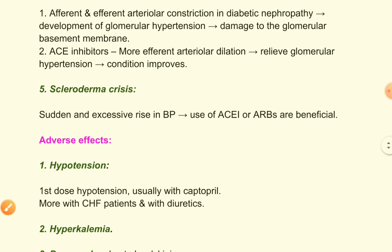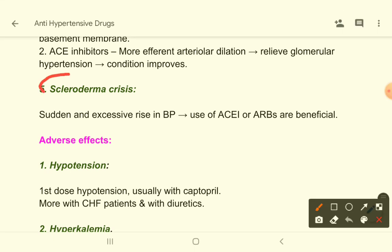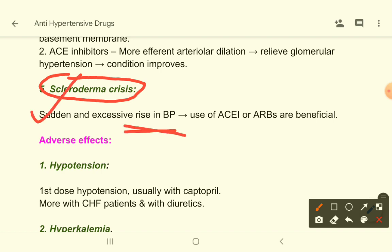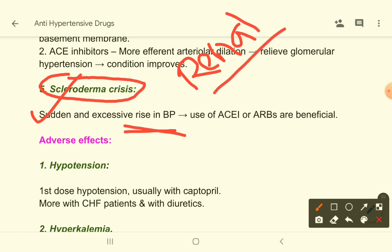In scleroderma crisis — a connective tissue disease with dermatological manifestations — there is sudden excessive rise in blood pressure, also called scleroderma renal crisis. ACE inhibitors or ARBs can be used in this condition.